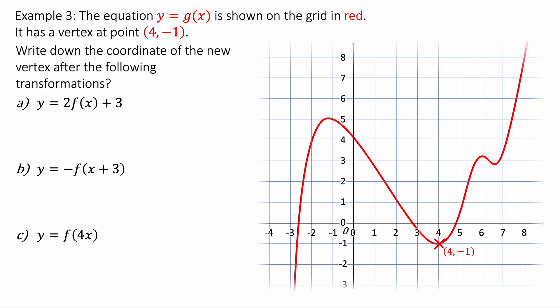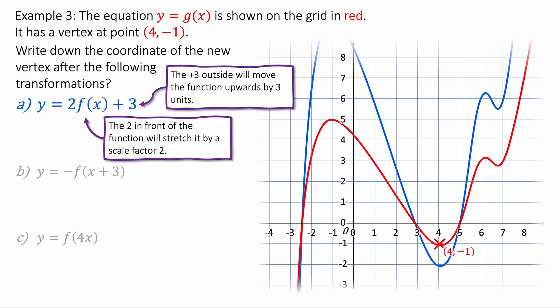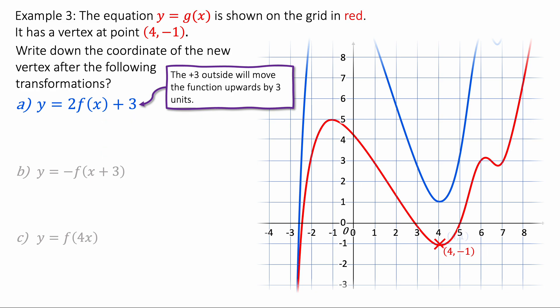Okay, so there's a few interesting transformations going on here. Let's start with question a. Y equals 2 f of x plus 3. Well, we're going to stretch the curve by scale factor of 2, because the 2 in front of the f of x stretches it vertically. And then we're going to add 3. So we're going to move it up by 3 spaces like this. So the y coordinate will double and then you would add 3 to it. And the new coordinate is going to be 4, 1.